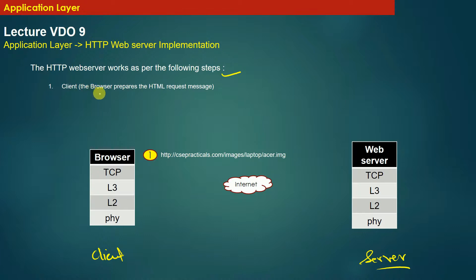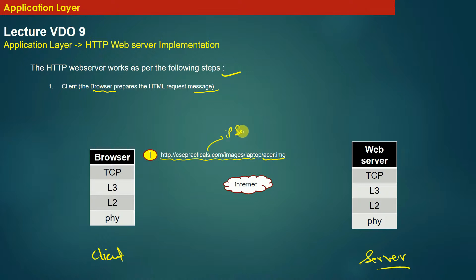The client here is nothing but a browser. The client prepares the HTML request message. This request message has a URL as well as the final resource which the client wants to fetch from the server — in this case, the image of Acer laptops, that is acer.img. The client needs to know the location of the resource. csepracticals.com resolves to the IP address of the server machine, which has a folder 'images', inside that a folder 'laptop', and inside that the image file acer.img.